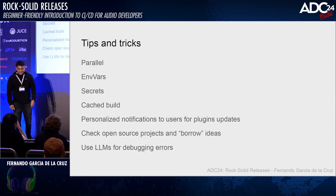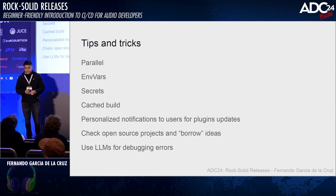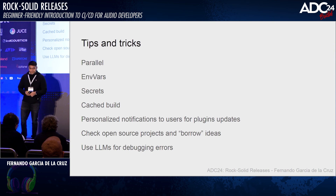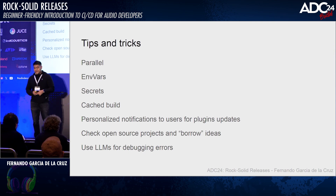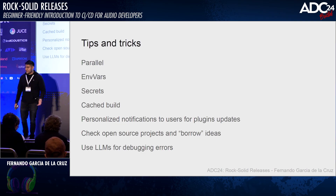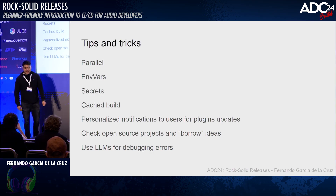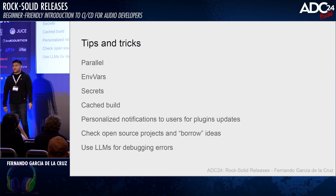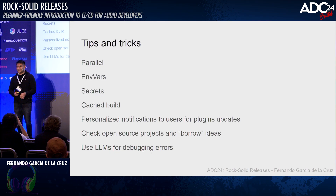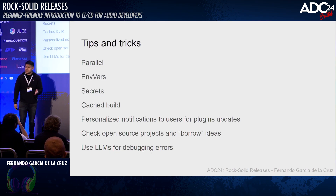These are the tips and tricks I wanted to share. First, use parallel builds for your plugins. Use environment variables and secrets. Use cache. Think about personalized notifications — for example, via Discord or communication channels with your clients. And we now have great LLMs we can use to debug or figure out how to do something. Hey, ChatGPT, how do I do this in GitHub Actions? It actually works very well.